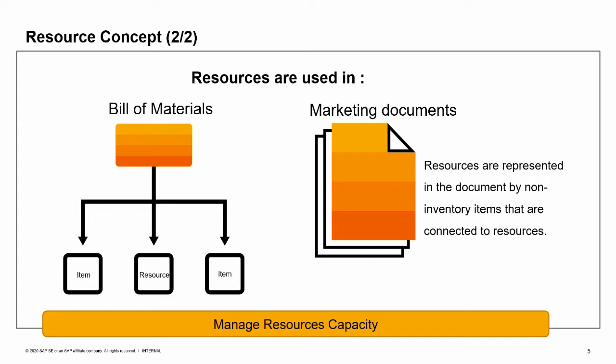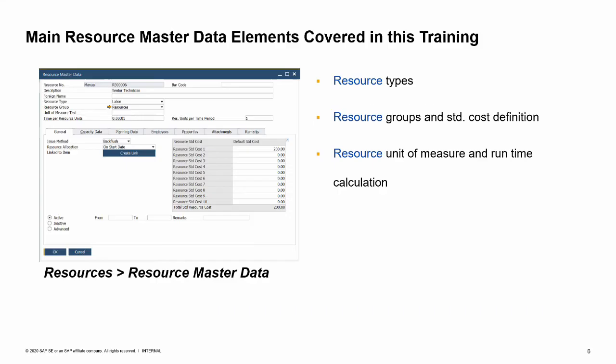Unlike items, resources are not accumulated in quantities — they are managed by capacity. In SAP Business One, we can plan and define a daily capacity for resources. By monitoring this capacity, we can optimize the production plan and avoid bottlenecks.